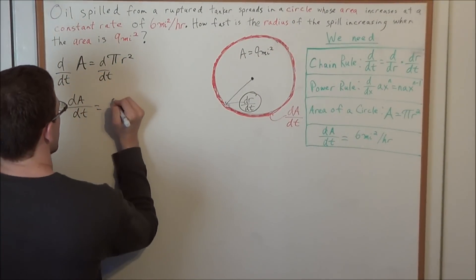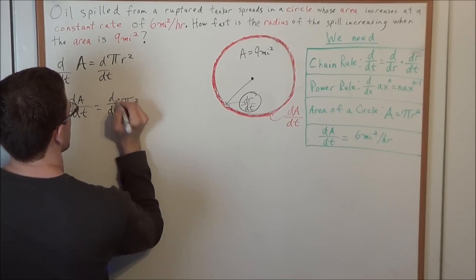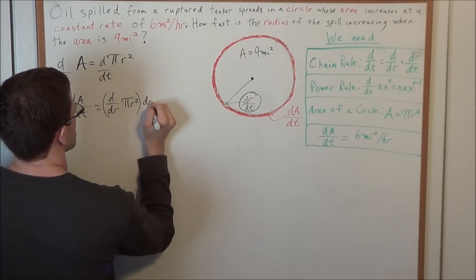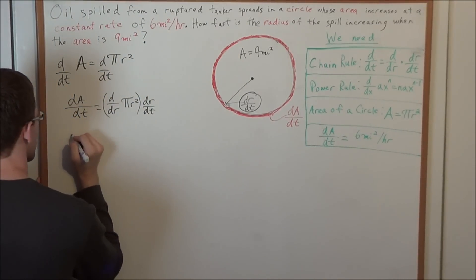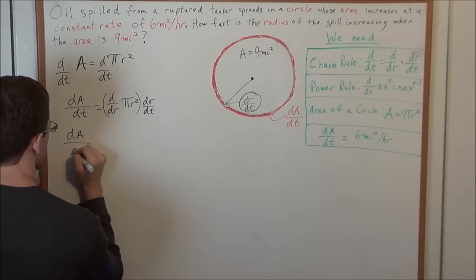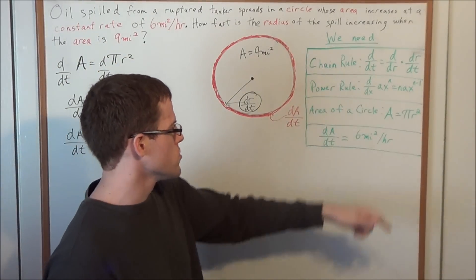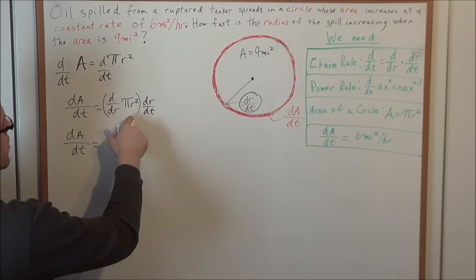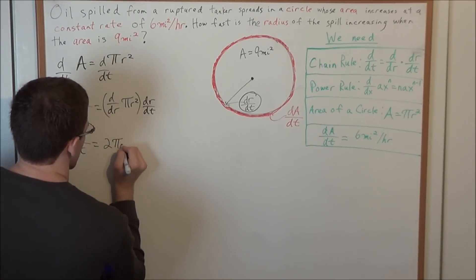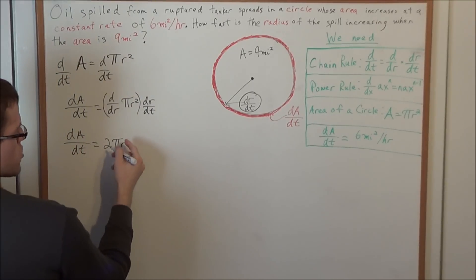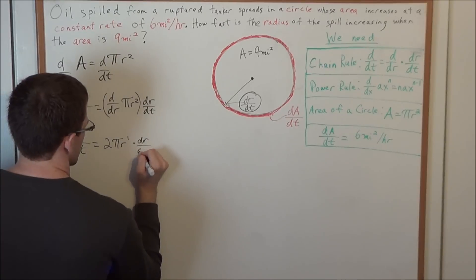So we look at d/dr of πr² times dr/dt. On the left-hand side we write dA/dt. On the right-hand side we use the power rule to find the derivative of πr² with respect to r, which gives us 2πr to the first power, times dr/dt.